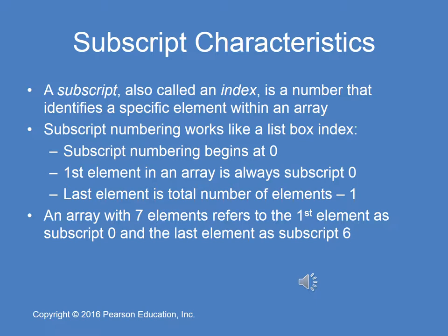A subscript, also called an index number, identifies the specific element within an array. Subscript numbering works like a list box index — it begins with zero. So the first element in an array is always subscript zero. The last element is the total number of elements minus one. So an array with seven elements refers to the first element as zero and the last element as seven minus one, or six.